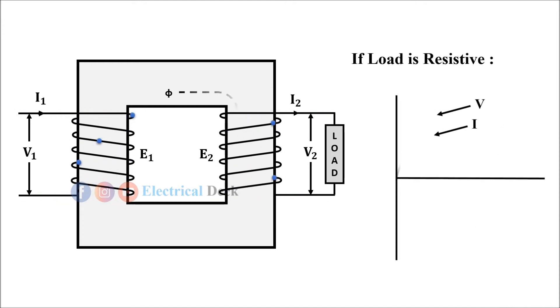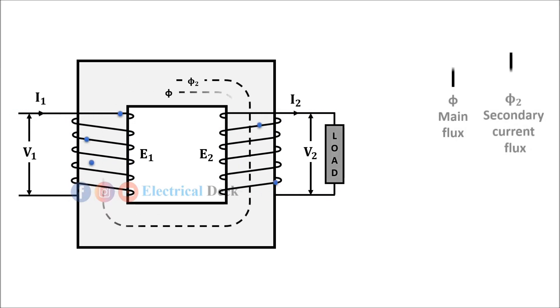Now when the transformer is loaded, there exists a secondary MMF N₂I₂ due to which secondary current sets up its own flux φ₂. This flux opposes the main flux φ which is produced in the core due to magnetizing component of no load current.